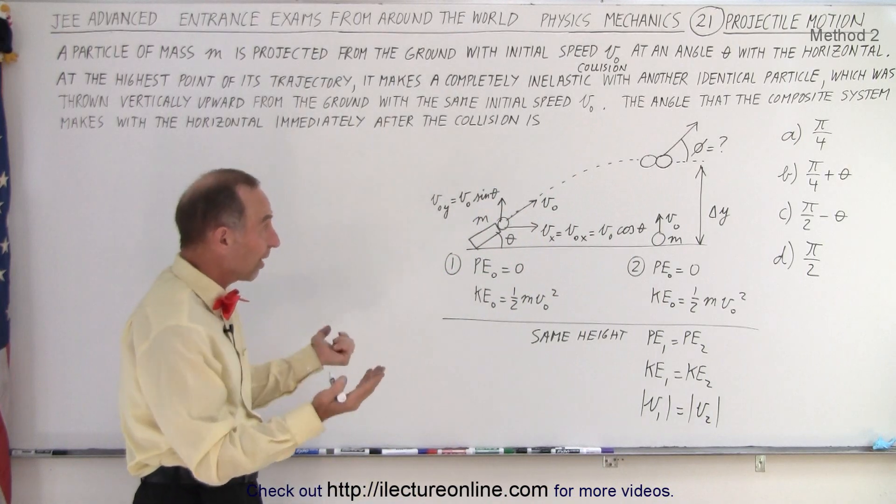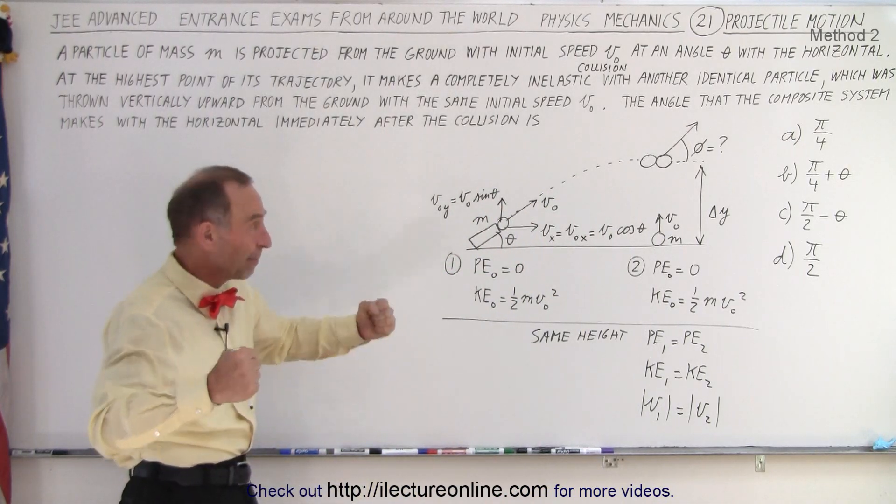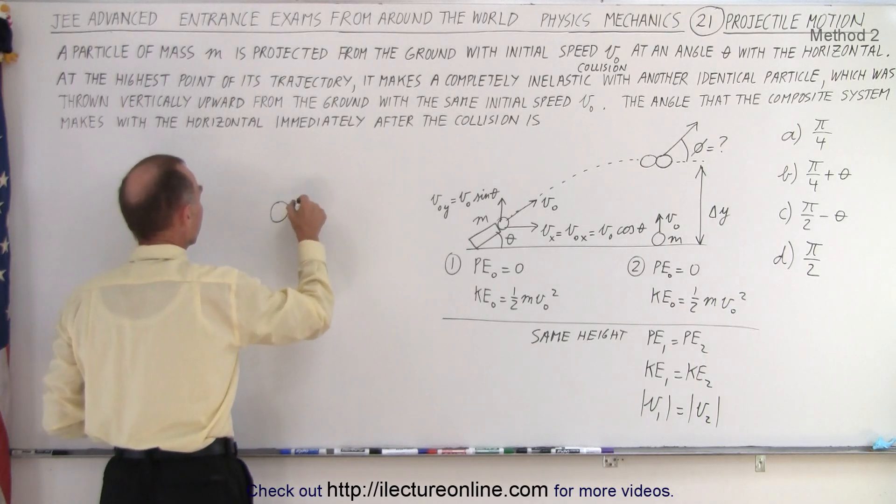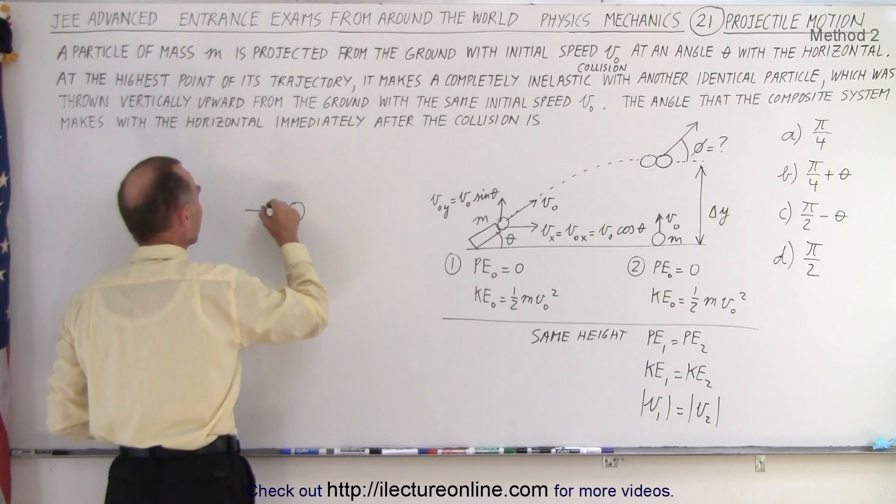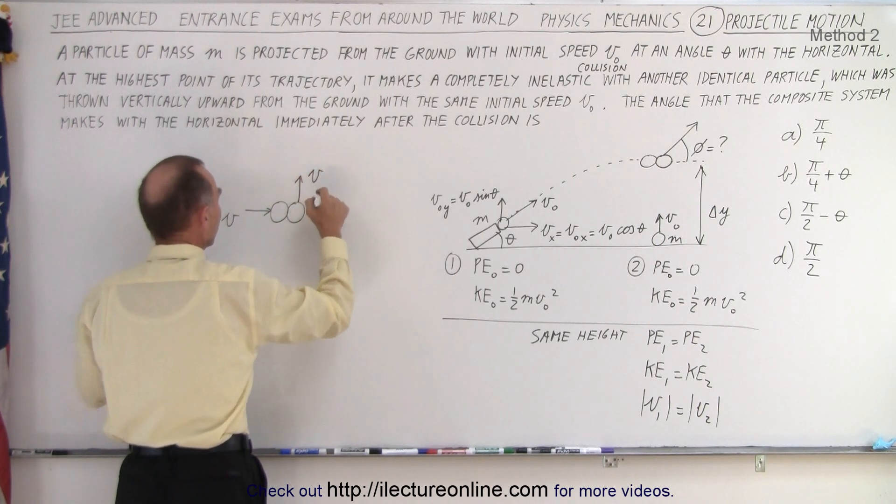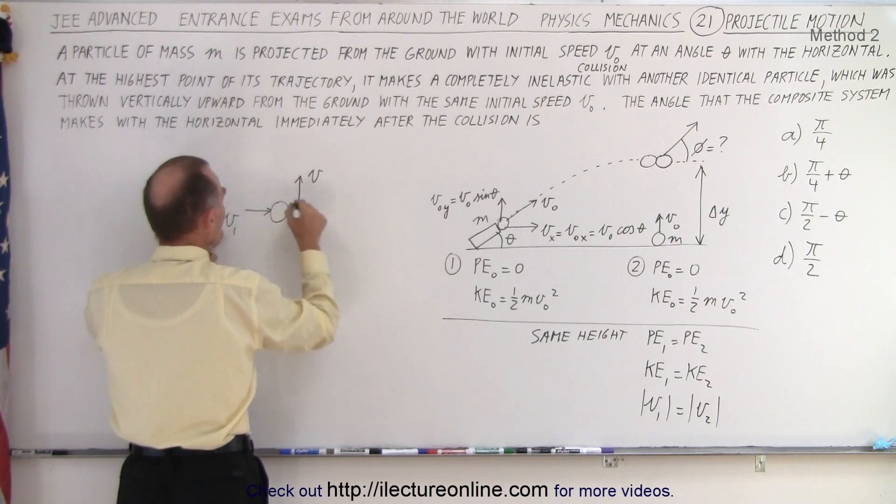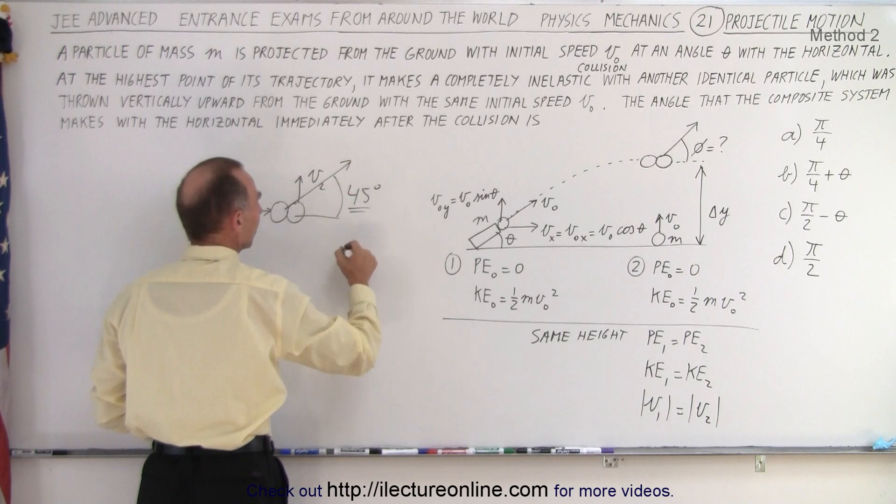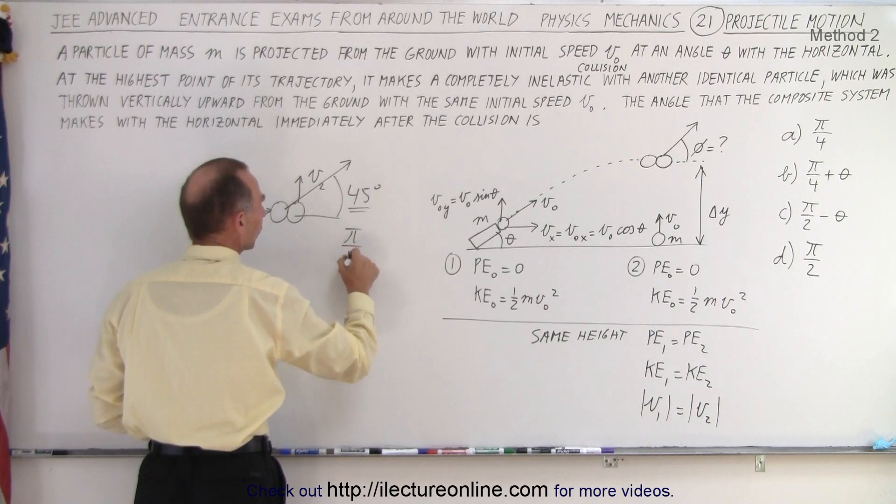At the collision point, and since they have the same velocity and they have the same mass and they collide, they will then go off at a 45 degree angle. So we have one particle coming in here at v, another particle going up at v. Those two v's are the same, v1 and v2. Since they're equal magnitude, the angle will be 45 degrees, which is pi over 4.